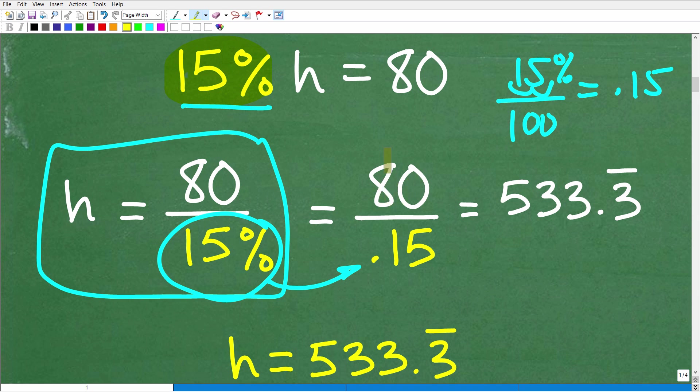So now to solve this problem, we just go into our calculator, take that 80 divided by 0.15, and you get this lovely answer right here, 533 point, and all these threes repeating. So 533.3 repeating, that is the solution.